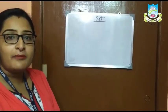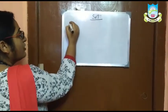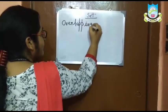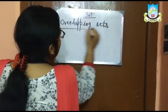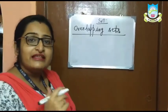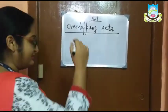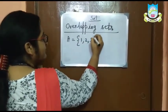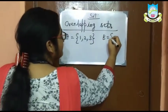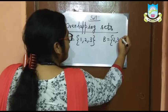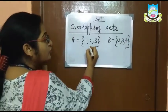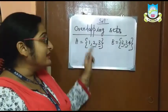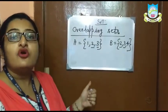Now we will learn about overlapping sets. If two sets have at least one element in common, then those two sets are known as overlapping sets. For example, set A has the elements 1, 2 and 3, and set B has the elements 2, 3 and 4. Since elements 2 and 3 are common in both sets, set A and set B are overlapping sets.